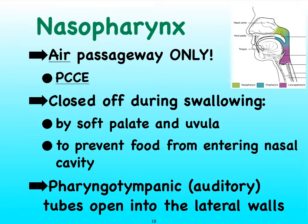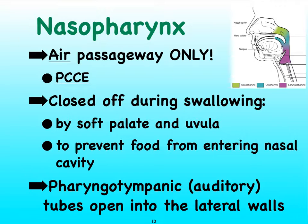Another thing to point out is that the tubes that get infected so often in little children — called the auditory tubes, or pharyngotympanic tubes, which connect to a portion of the inner ear — actually open up into this particular region of the pharynx called the nasopharynx. You will also see these auditory tubes referred to as eustachian tubes.